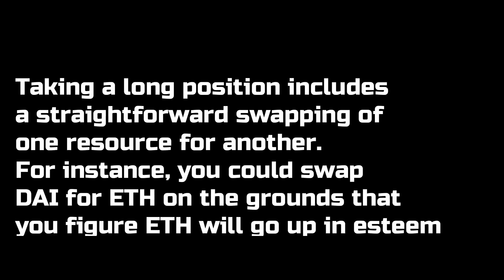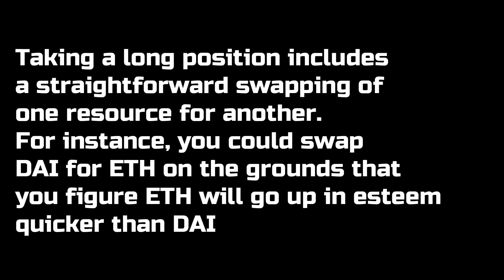Feature number six: long positions. Taking a long position involves a straightforward swapping of one asset for another. For instance, you could swap DAI for ETH on the grounds that you believe ETH will go up in value faster than DAI.